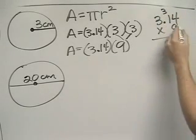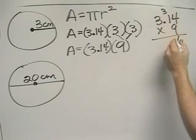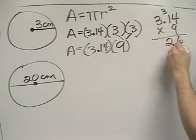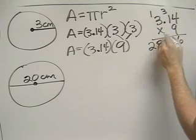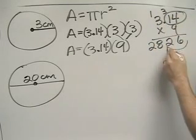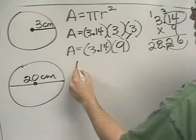9 times 4 is 36, 9 times 1 is 9, plus 3, 9, 10, 11, 12. Carry the 1. 9 times 3 is 27, plus 1 is 28. Since there's two decimal places, we're going to move it over two places.